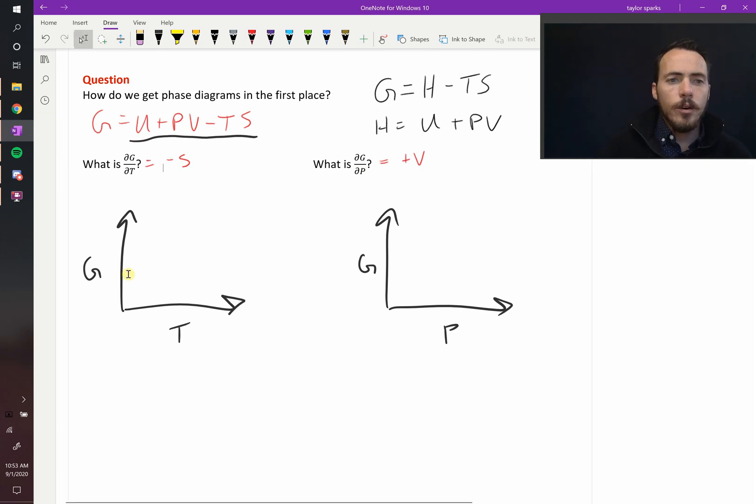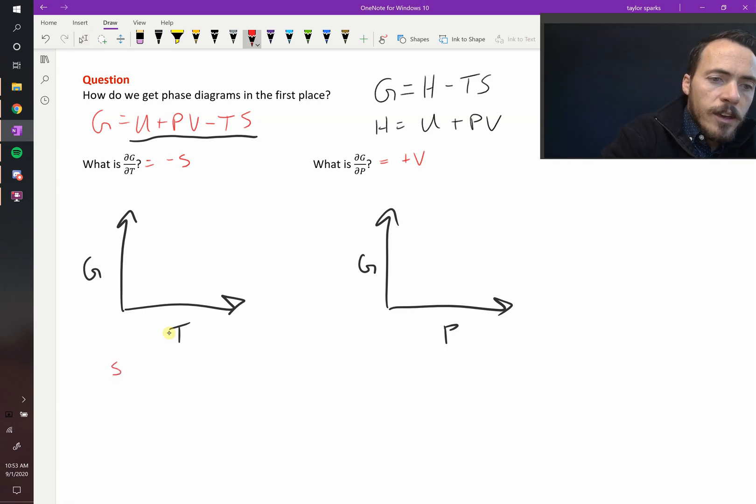Therefore, we know that in a G versus T plot, if we have three phases—solid, liquid, and gas—which one has the most entropy? The entropy of a gas phase is going to be larger than the entropy of a liquid phase, which is going to be larger than the entropy of a solid phase.